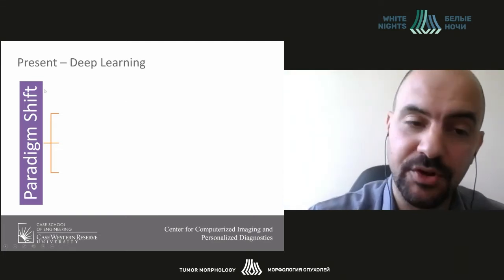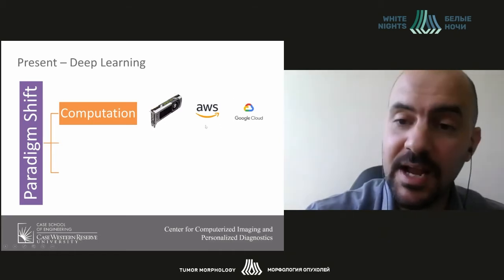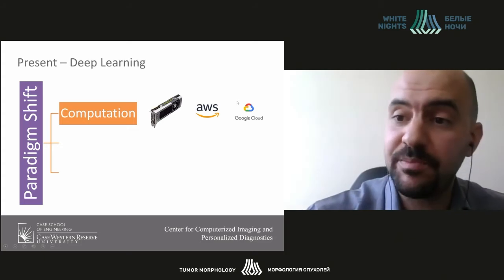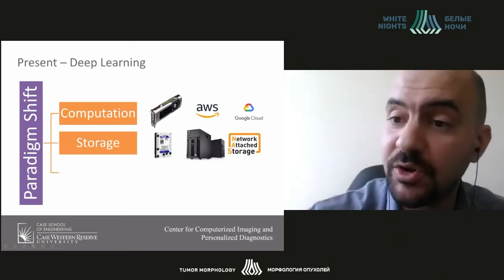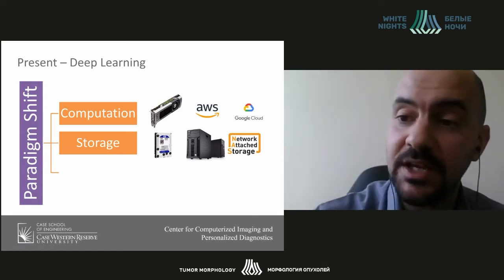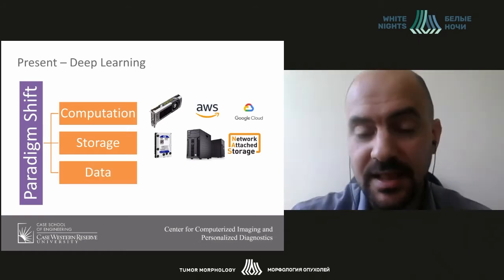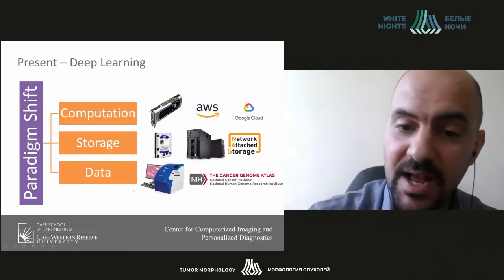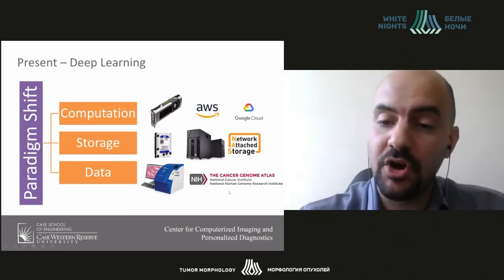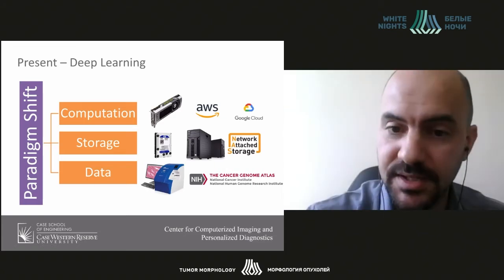We've seen a large shift towards deep learning, driven by three major components: computation has become significantly cheaper through GPUs and cloud computing; we have cheaper storage, so we can store petabytes of data at reasonable cost; and we have more availability of data, as hospitals purchase digital slide scanners and large-scale repositories like the Cancer Genome Atlas, which has over 60,000 slides, are created.